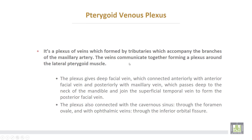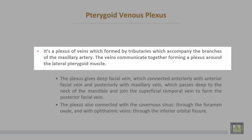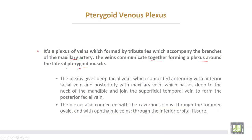The pterygoid venous plexus is a plexus of veins formed by tributaries that accompany the branches of the maxillary artery. The veins communicate together, forming a plexus around the lateral pterygoid muscle. The plexus gives rise to the deep facial vein, which is connected anteriorly with the anterior facial vein and posteriorly with the maxillary vein. The maxillary vein passes deep to the neck of the mandible and the joint, joining the superficial temporal vein to form the posterior facial (retromandibular) vein.